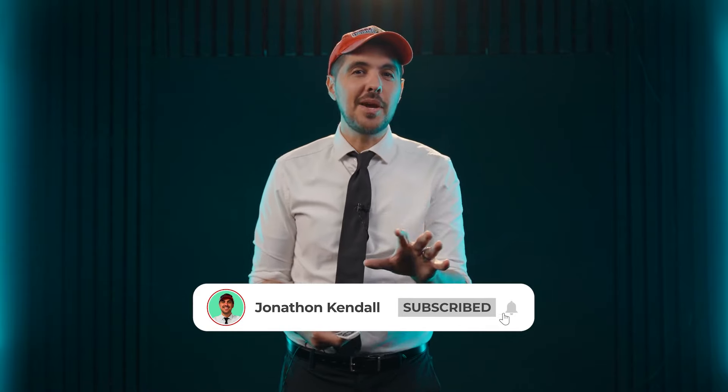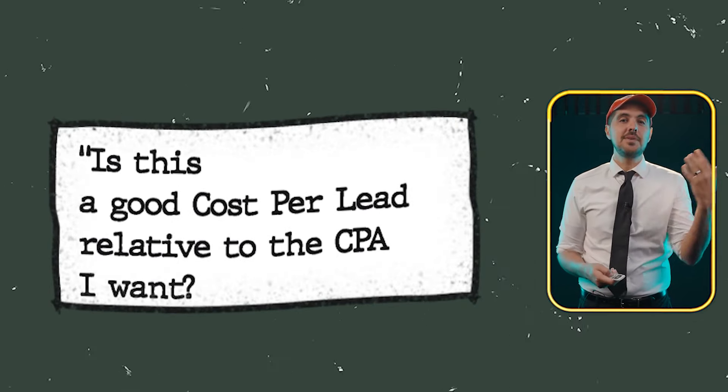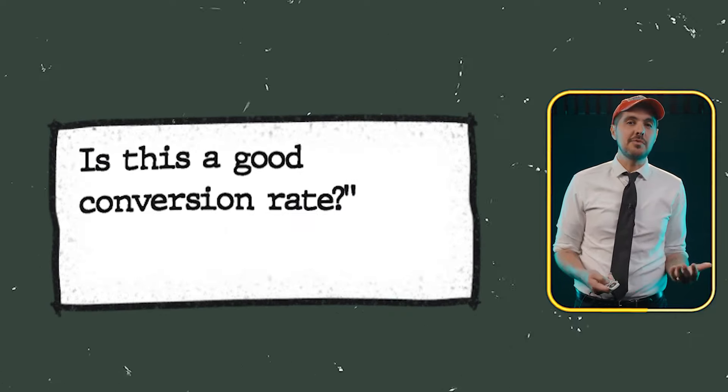So this is not the sexy answer, but it's the truth. A good cost per view, cost per click, cost per lead, and conversion rate — it really depends on your company. Either way, you need to know what your cost per acquisition is, and then reverse engineer the percentages you want in order to reach that target CPA, which means you just need to look at the data and use common sense. Ask yourself: is this a good cost per lead relative to the CPA I want? Is this a good cost per view? Is this a good conversion rate? If they're not, then you know where the problem is.